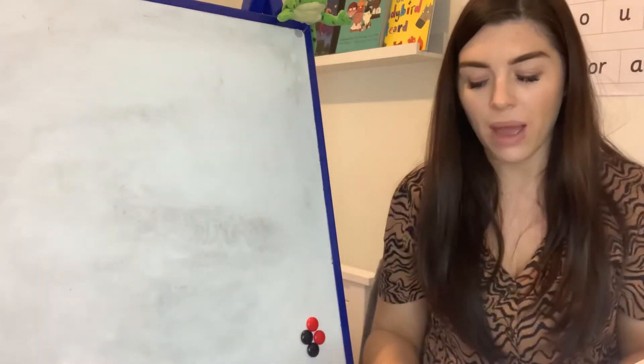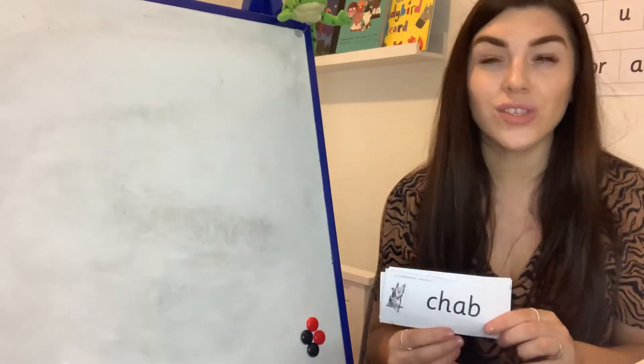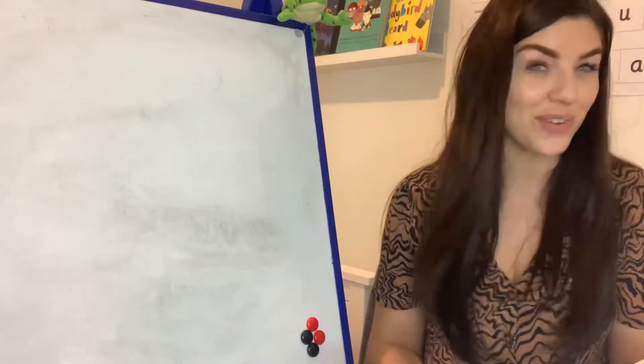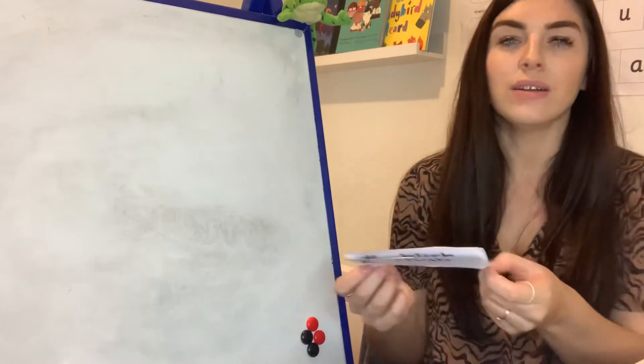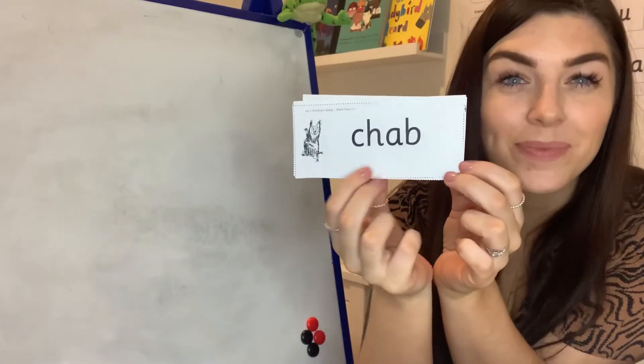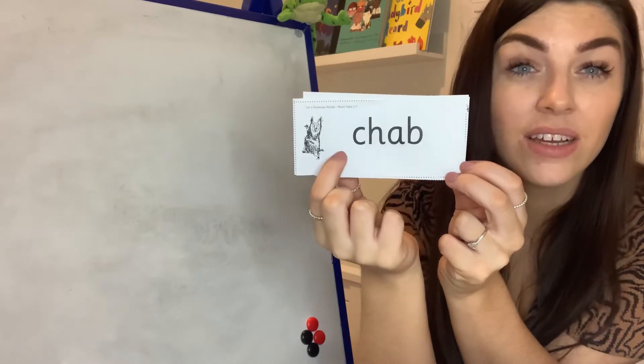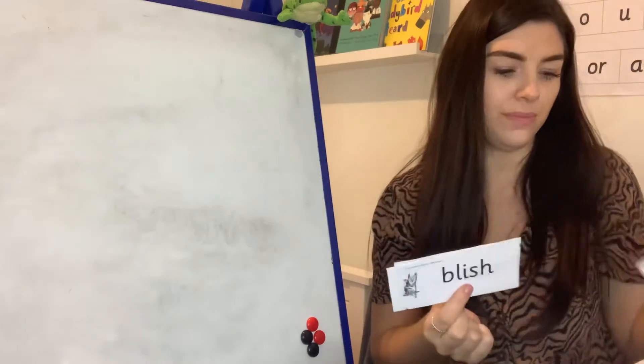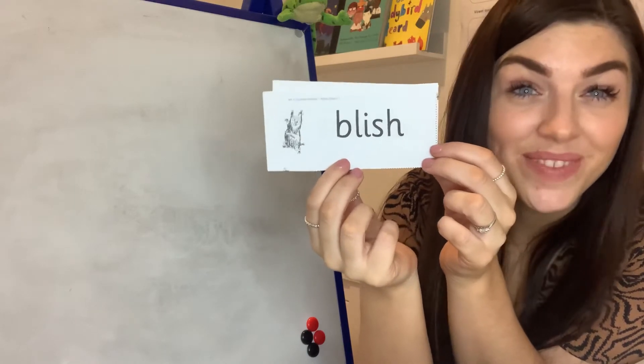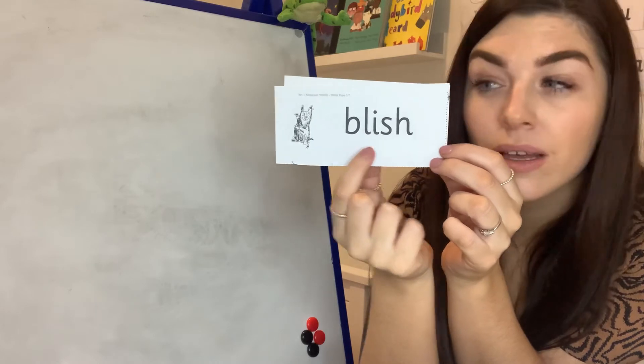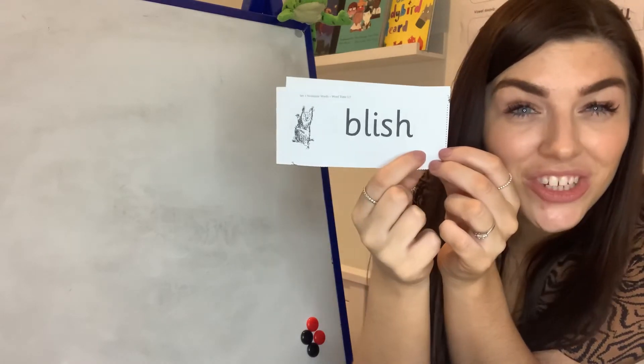Now then, as an extra bit of a challenge I want you to have a go at reading some alien words. Remember alien words are such a load of nonsense, they don't make any sense at all. So let's have a go using our Fred talk, spotting our special friends to see if we can read these words together. Have a go at this one. Are there any special friends? Ch. Good. Fred talk. Ch-a-b. Read the word. Chab. Good. Are there any special friends? Sh. Read the word. Blish. Brilliant.